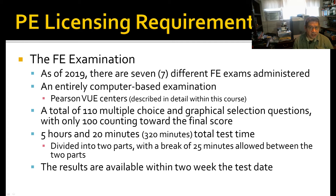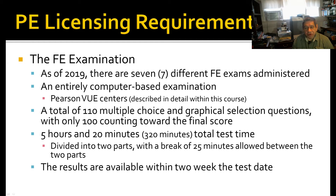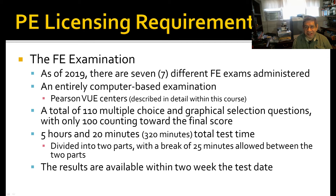Now the FE examination — as of 2019, when I'm doing this video, seven unique FE examinations are administered. They are entirely computer-based examinations. The Pearson VUE Centers is the facility that NCEES uses to administer those computer-based tests. Each test is 110 multiple choice and graphical selection questions — you have four choices: A, B, C, D. You click on the little bubble on the screen and move on to the next question when you are sure you have the answer. Be aware though: they have figured out most of those answer choices with known errors of computation. So it's very possible that you think you came up with the right calculation and you see your answer among those four choices — however, it's the wrong one because that's one of the common mathematical mistakes.